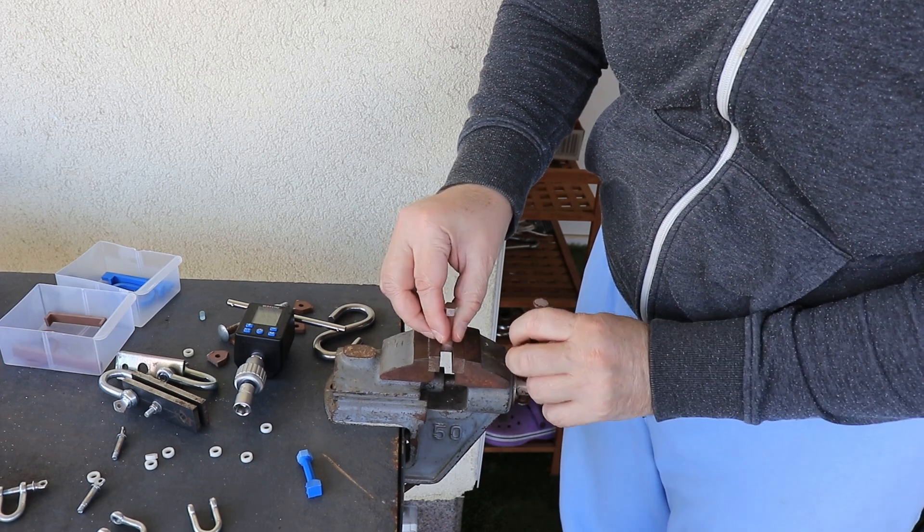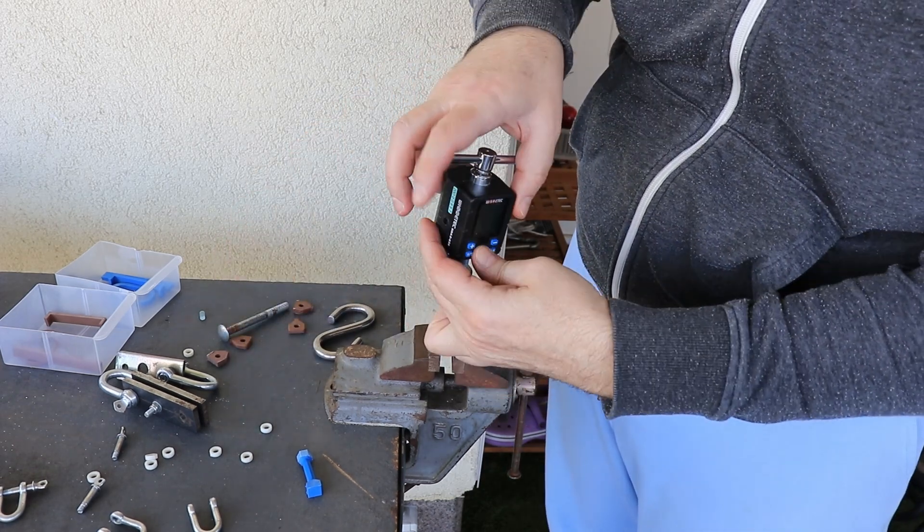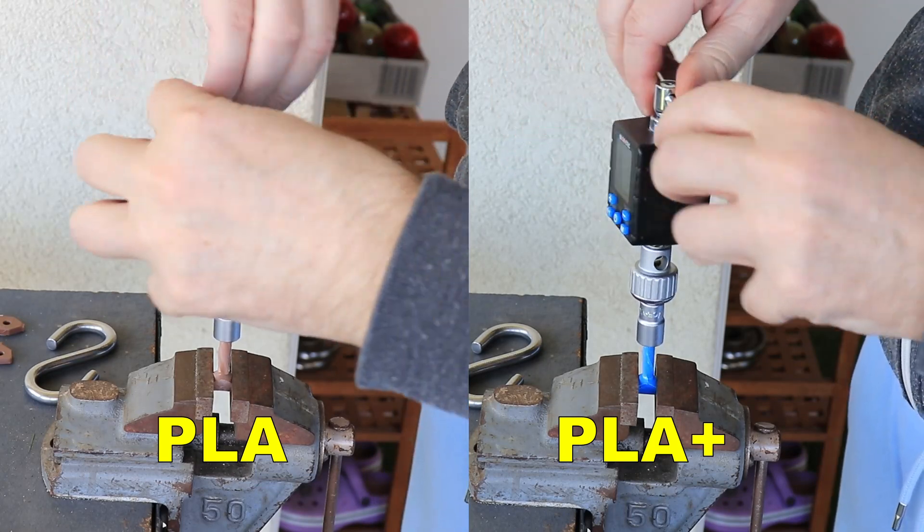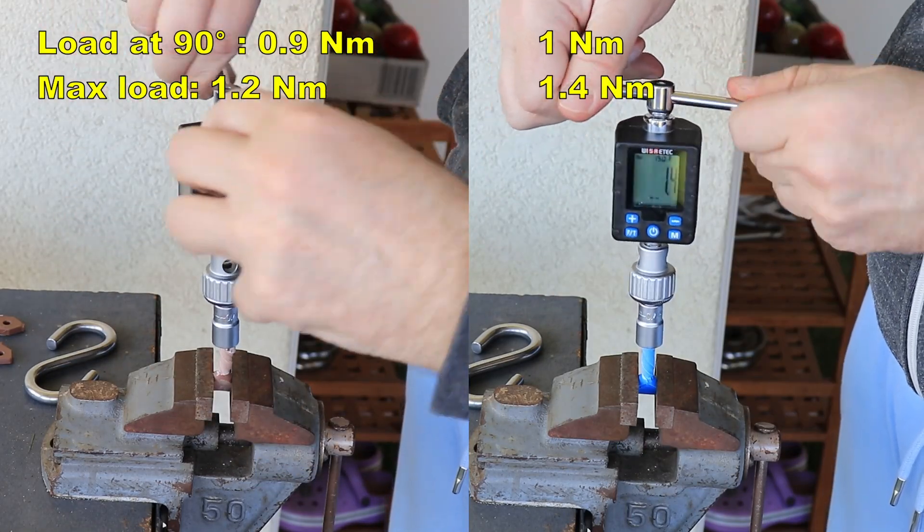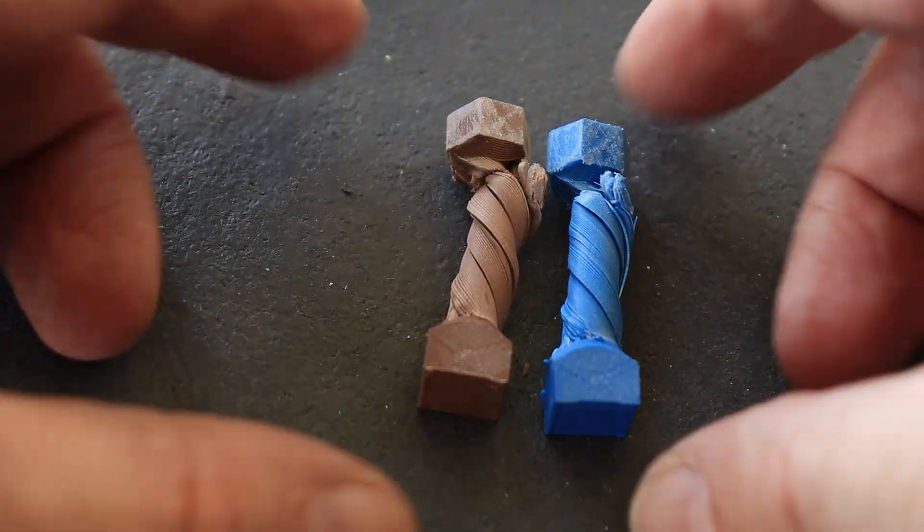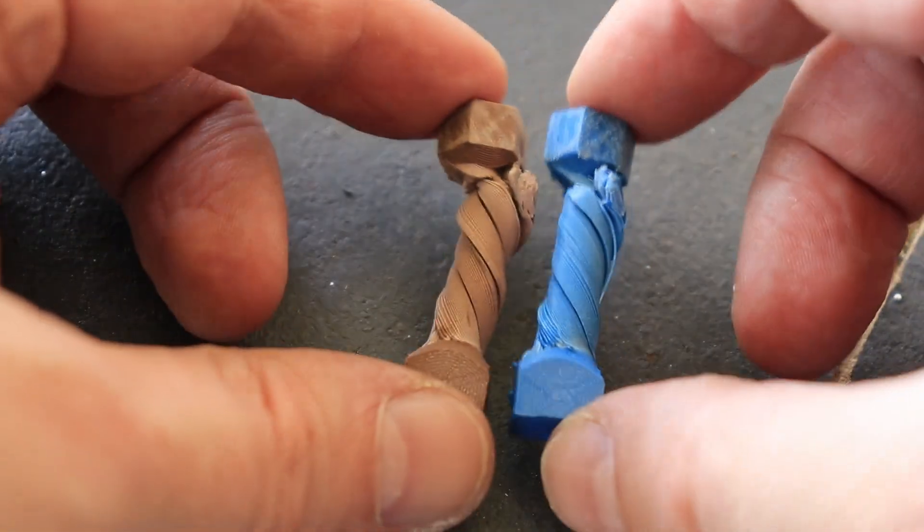And my torque or twist test. The test objects have a diameter of 6 mm and I am recording the torque at 90 degree angle and the maximal torque. PLA Plus a little bit stronger but the difference is not too big, but the deformation is very similar in both cases.